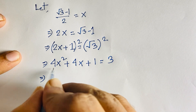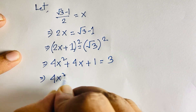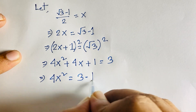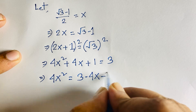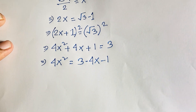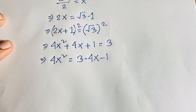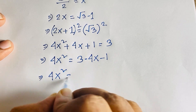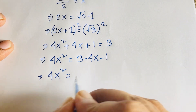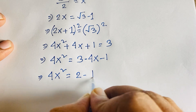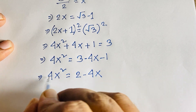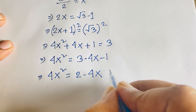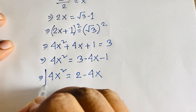This equation becomes 4x² = 3 minus 1 minus 4x. Moving terms, we find 4x² = 2 minus 4x. Remember this equation.